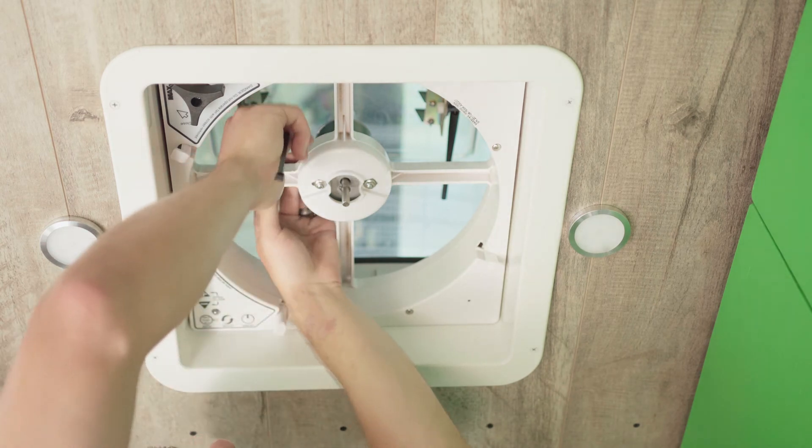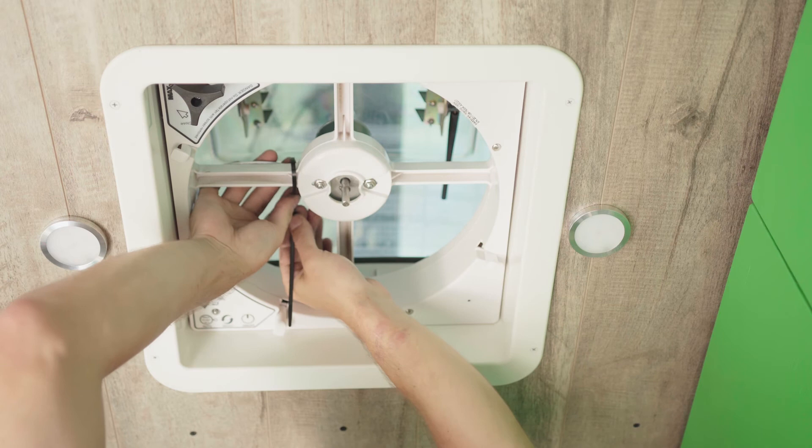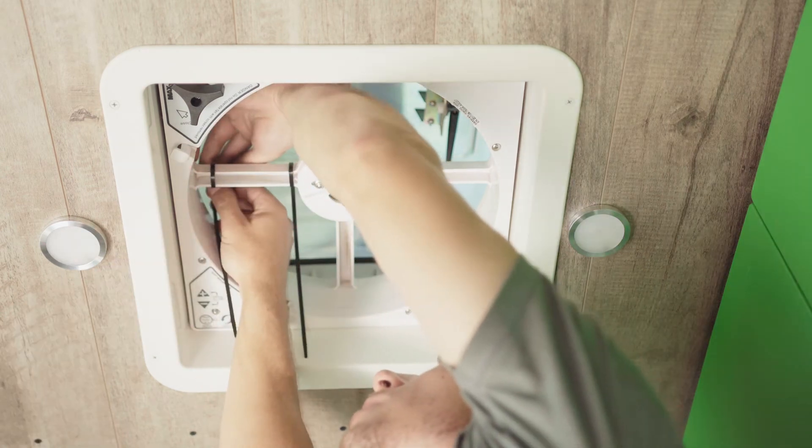Now that we've got the fan bolted back down, we're going to put two wire ties back on the wires so that they stay out of the way and don't have to worry about them catching the fan. And then trim off the excess for the wire ties.